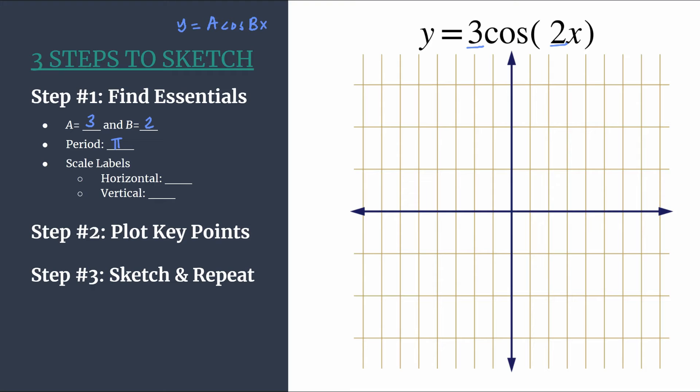And this is done very intentionally. We're kind of looking ahead, we know we're going to have four key points in our pattern, and so this ensures that each of these key points will line up with our horizontal tick marks.